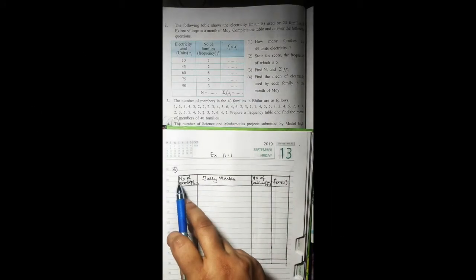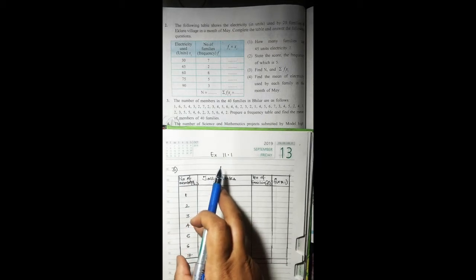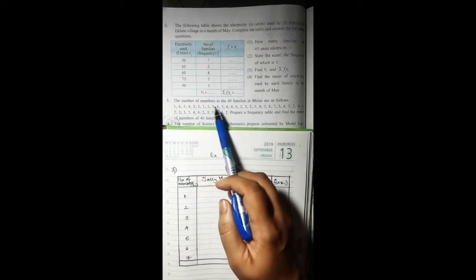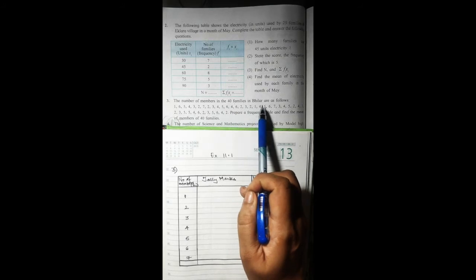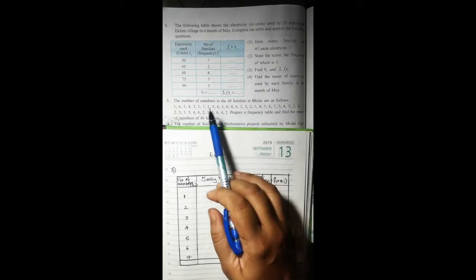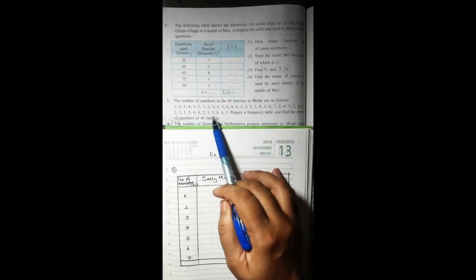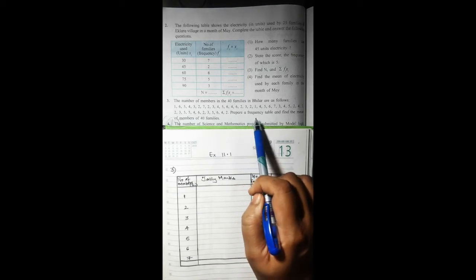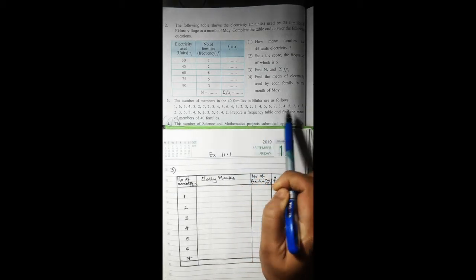This is sum number three of exercise 11.1. The problem states: the number of members in 40 families in Bilara is as follows. The number of members are given here and you have to prepare a frequency table and find the mean number of members of the 40 families.